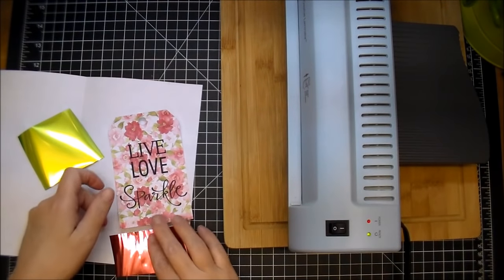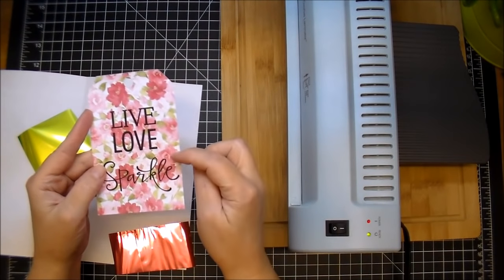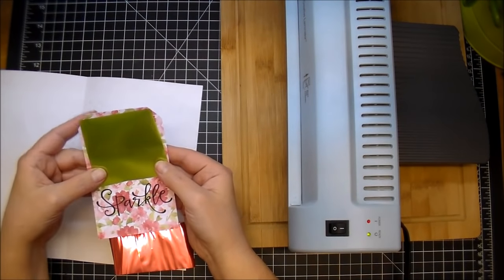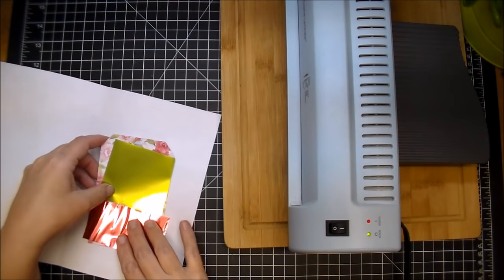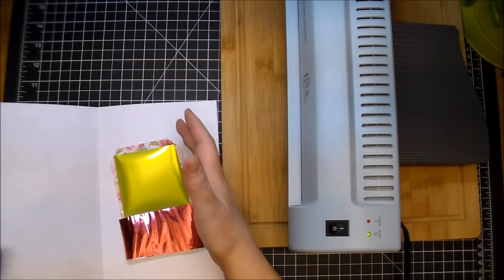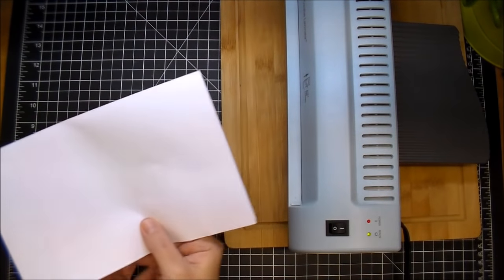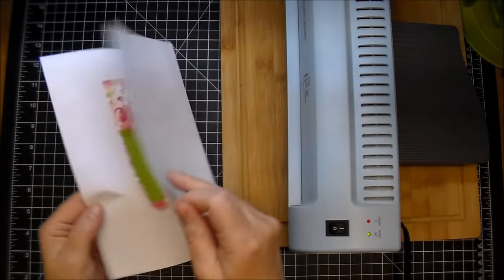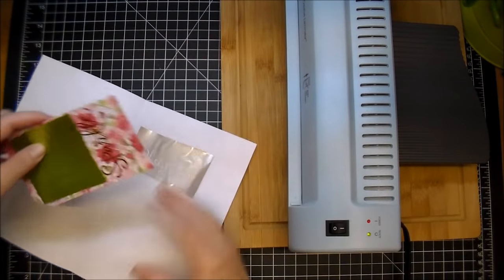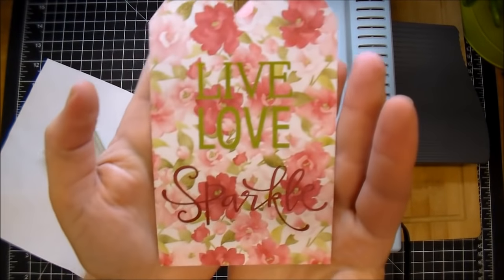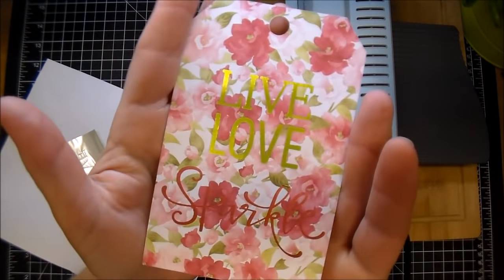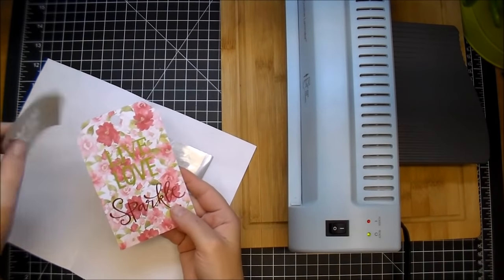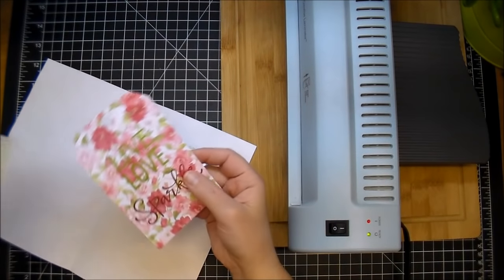I did also want to show you that you can use two different colors of foil. So I printed out this same 'Live Love Sparkle' and this has a beautiful green and pink in the design, so I thought I would use both. So just lay it over the part that you want it to cover, again sandwich it in your paper, and run it through. And here is what it looks like with two different colors of the foil. Absolutely beautiful! I'll have some detailed photos in the end also that hopefully it picks up just how pretty this is. And if it does miss a little spot, just find another piece with the foil on it and send it back through.